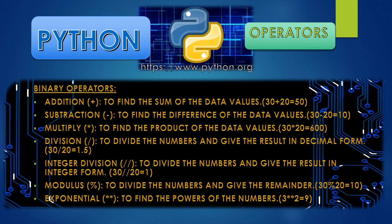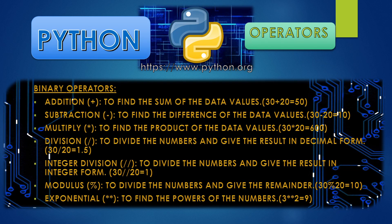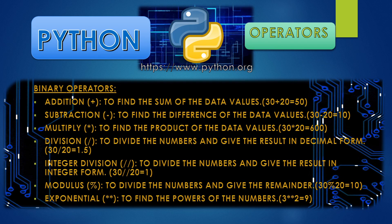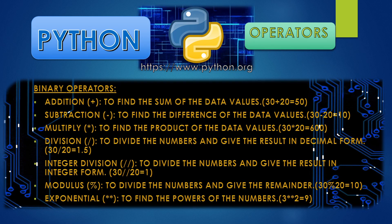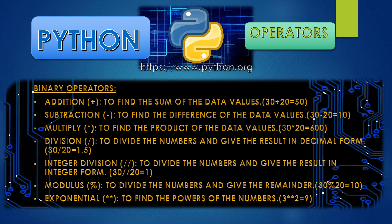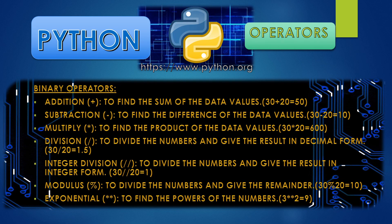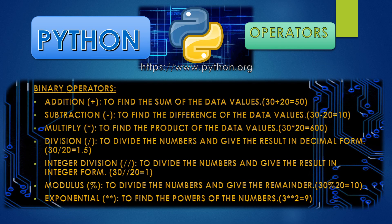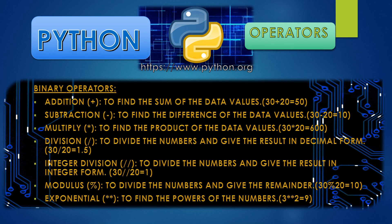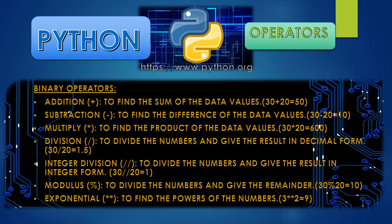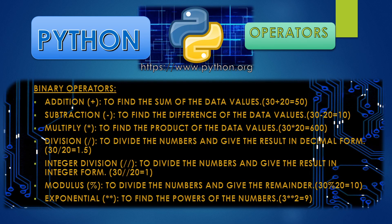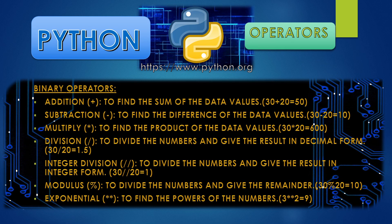Addition: 30 + 20 = 50. Subtraction: 30 - 20 = 10. Multiplication: 30 * 20 = 600. For division, there are three categories. The first gives the decimal result: 30 / 20 = 1.5. The second, integer division, gives only the integer value: 30 // 20 = 1. The third, modulus division, gives the remainder: 30 % 20 = 10. The last binary operator is exponentiation, which gives the power of a number — 3 ** 2 = 9, like 3 multiplied by 3.